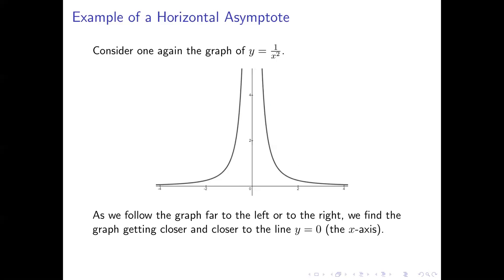Notice what happens as we move further and further to the left or to the right on the graph of 1 over x squared. What we find is that the graph is getting closer and closer to the line y equals 0, or in other words, the x-axis. So we say that the line y equals 0 is a horizontal asymptote of 1 over x squared.